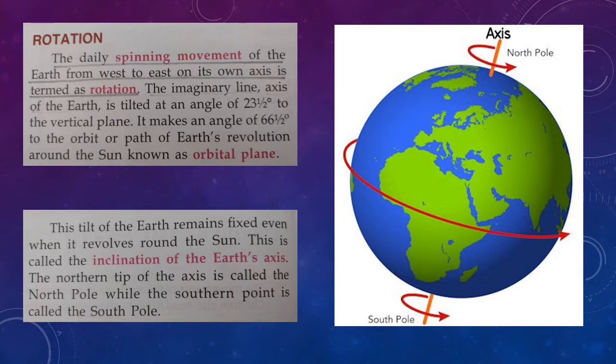Did you understand the two motions of the Earth now? The first motion is rotation, which is the spinning of the Earth, and the second motion is revolution, which means the Earth moving around the sun. In this tutorial, we are going to learn about rotation. The daily spinning movement of the Earth from west to east on its own axis is termed as rotation. And the imaginary line around which the Earth moves is called the axis. Now, this axis is not straight — as you can see, the red line here is tilted.